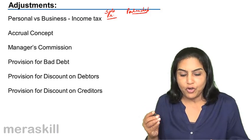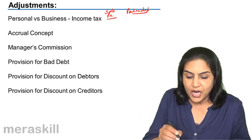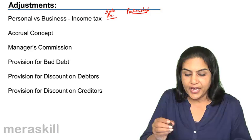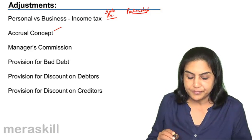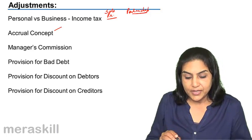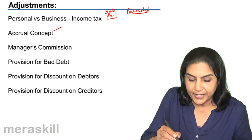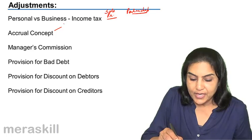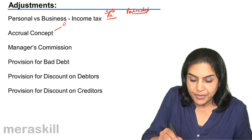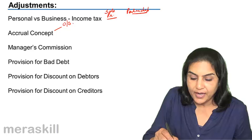Let us just run through all the other adjustments. Accrual concept. In case of accrual concept, this gives rise to four different items. One is accrual concept, outstanding expense.